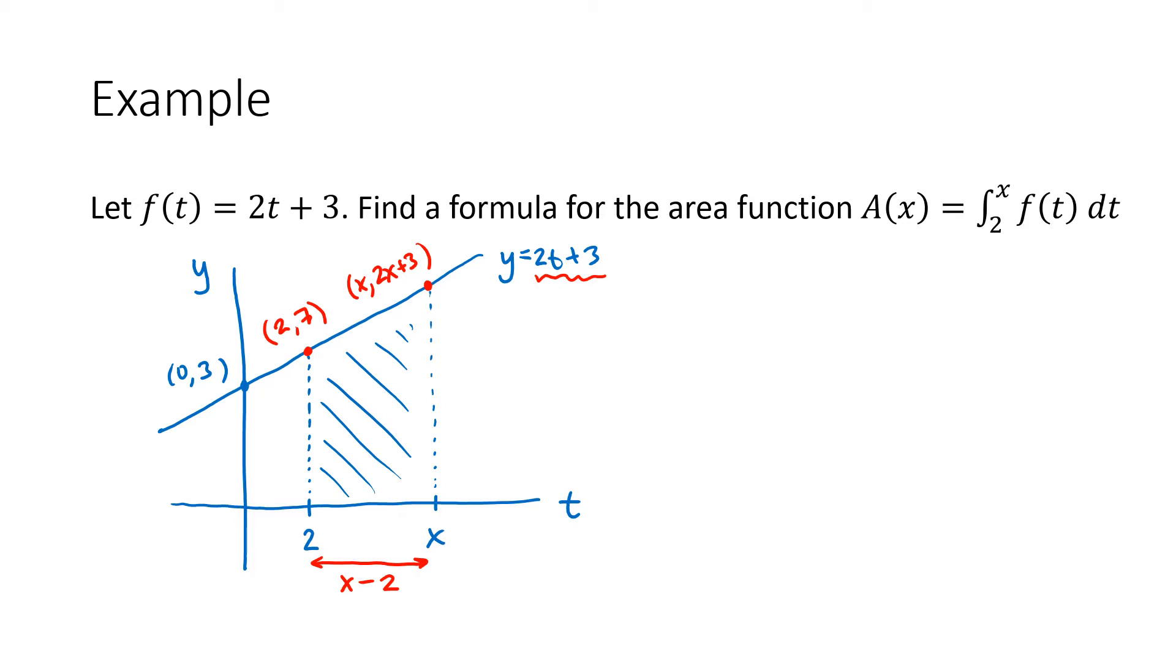All right, so we've done similar problems like this before. We're going to think of this as a triangle sitting on top of a rectangle. So what's the area of this rectangle? Well, this height is 7 and the base is x minus 2. So area equals base times height. That's going to be 7 times x minus 2.